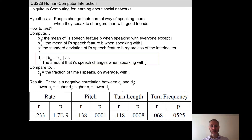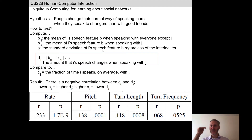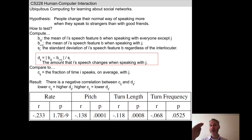We're also going to compute S_sub_I — the standard deviation for the i-th student. How varied is their rate, pitch, turn length, and turn frequency? Some people maintain a relatively constant prosody regardless of who they're speaking to. But other people change their tone depending on who they're talking to — that latter person would have a high S_sub_I.